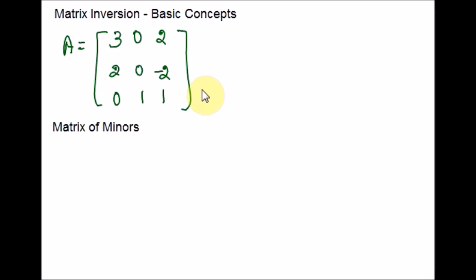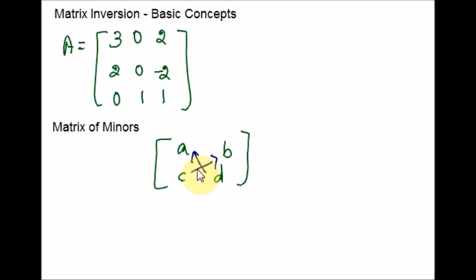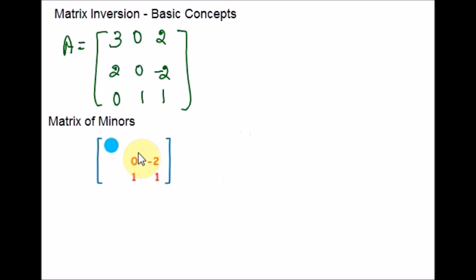For a 2 by 2 matrix, the determinant is easy — you can think of a cross, and you multiply the numbers in the cross. It gets harder for a 3 by 3 matrix. Let me show you how to calculate the matrix of minors for a 3 by 3 matrix.